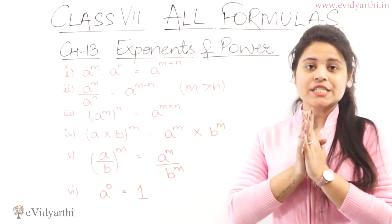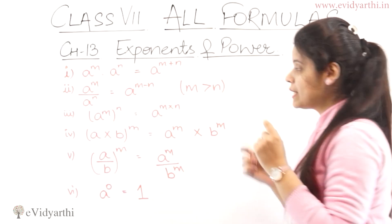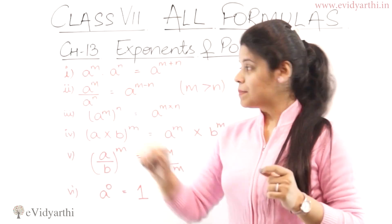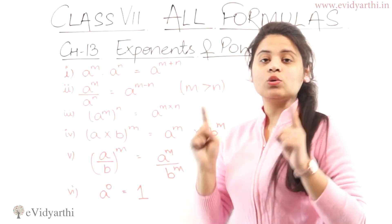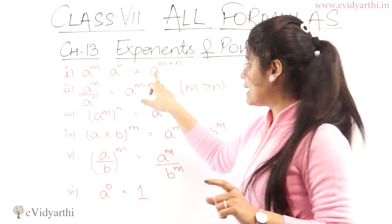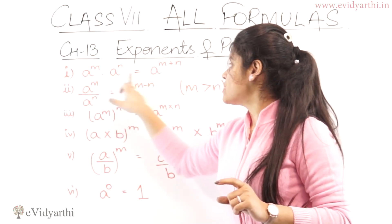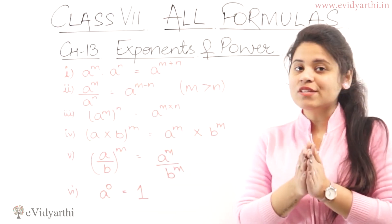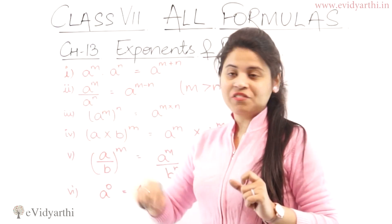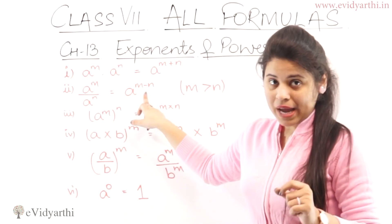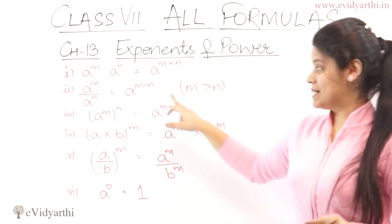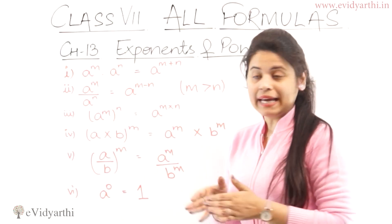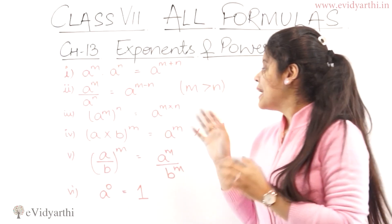Now moving to the next chapter, which is exponents and powers. We have laws of exponents. The first law: a raised to the power m, into a raised to the power n — when bases are the same, we add the powers. The second law: a raised to the power m divided by a raised to the power n — we subtract the powers, and you must ensure m is greater than n. That equals a raised to the power m minus n.